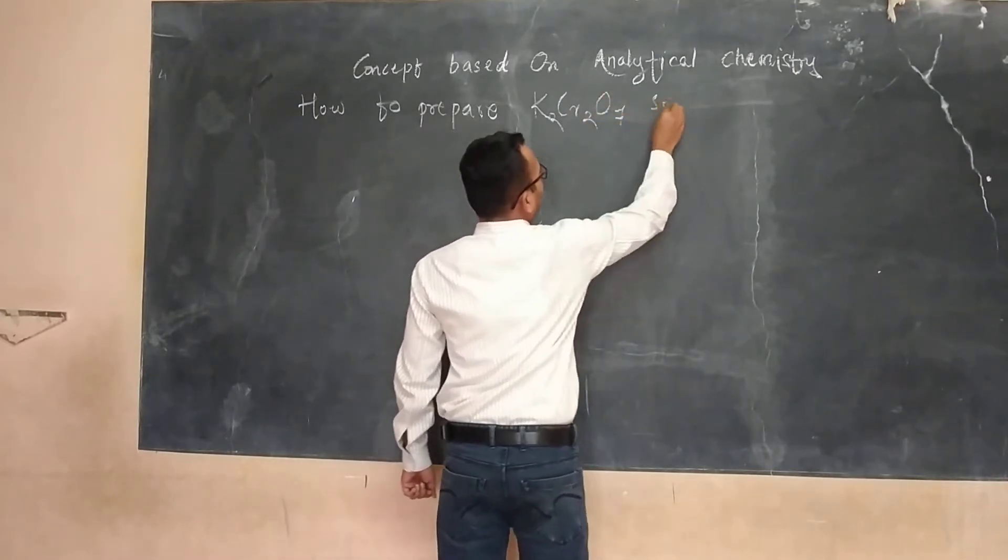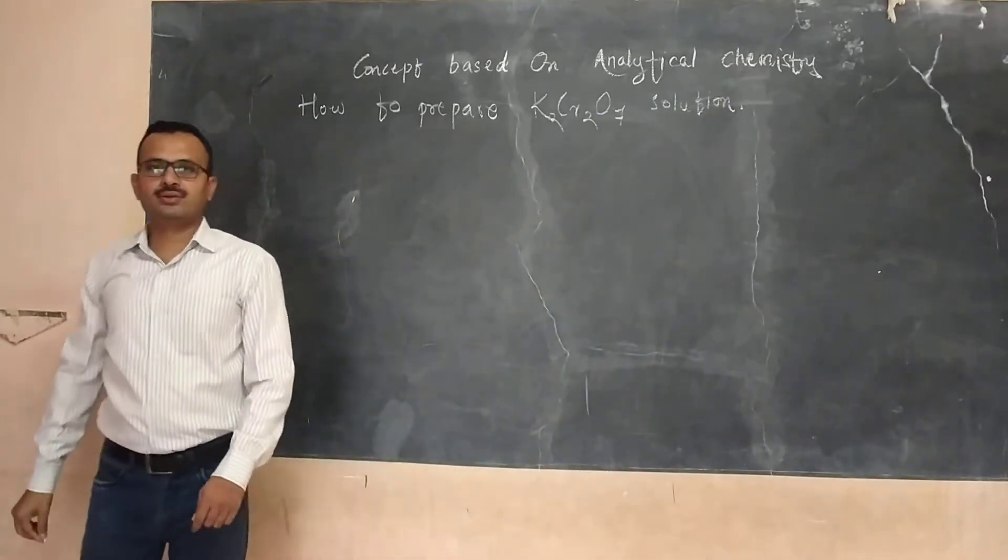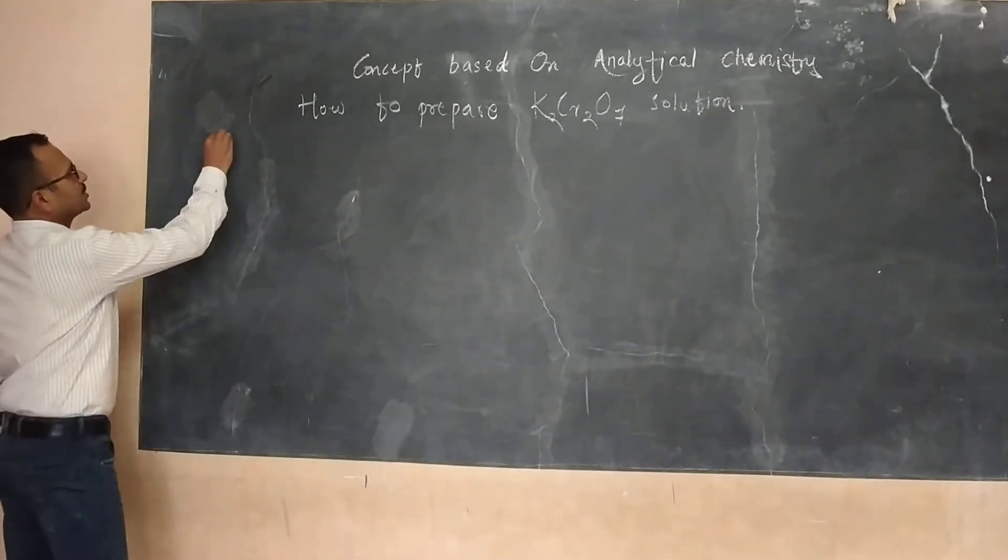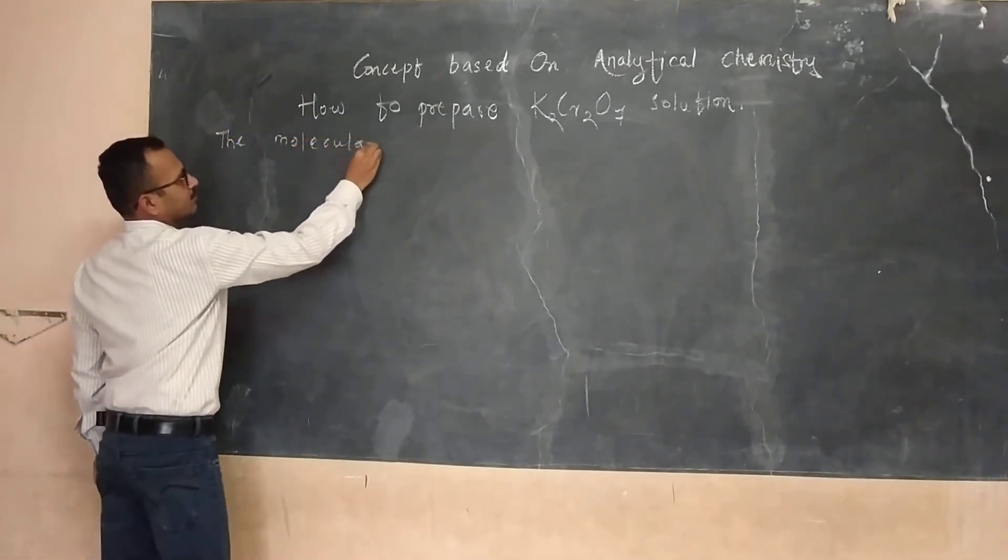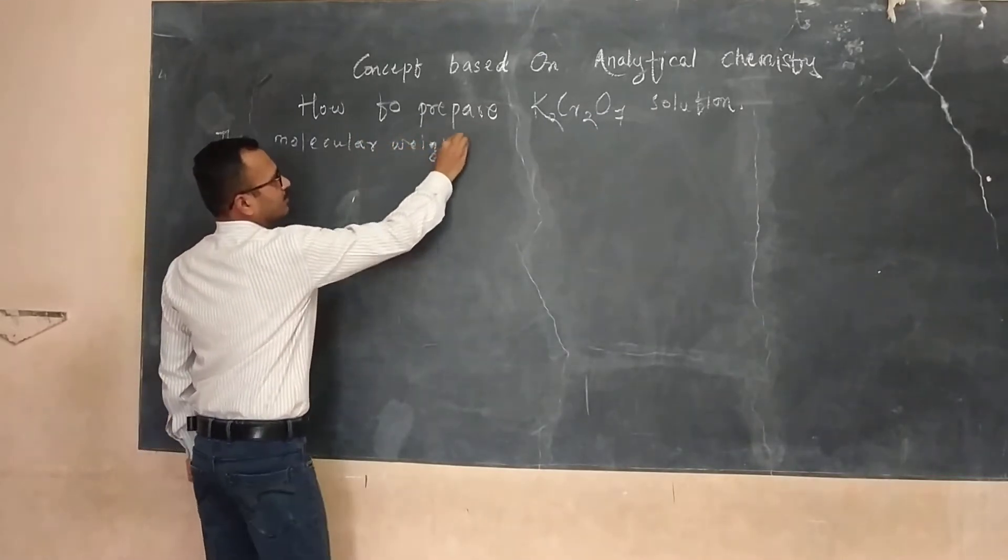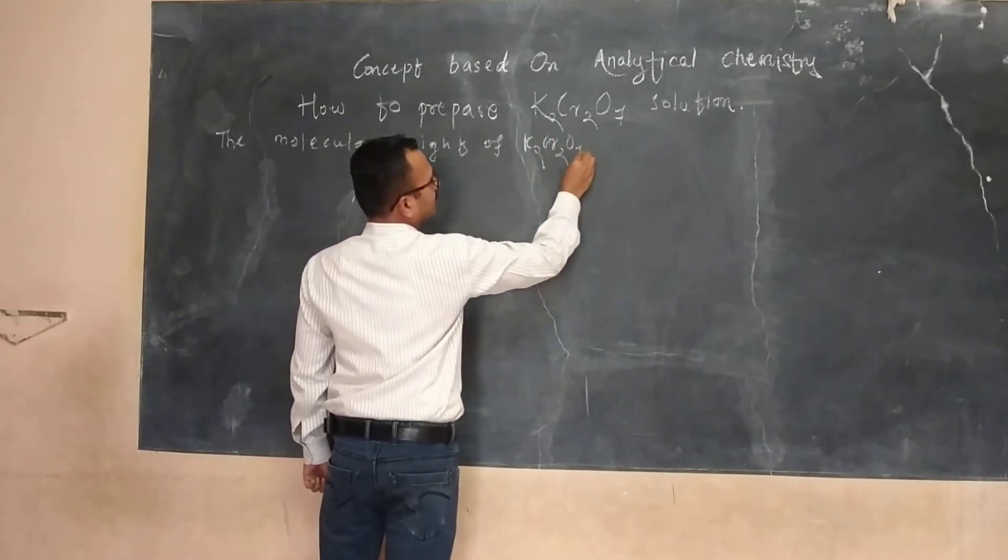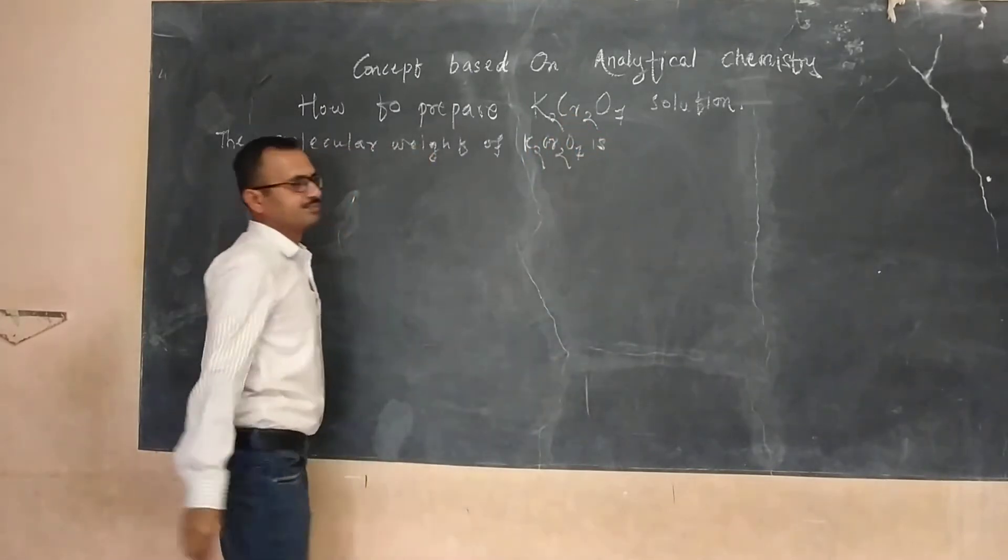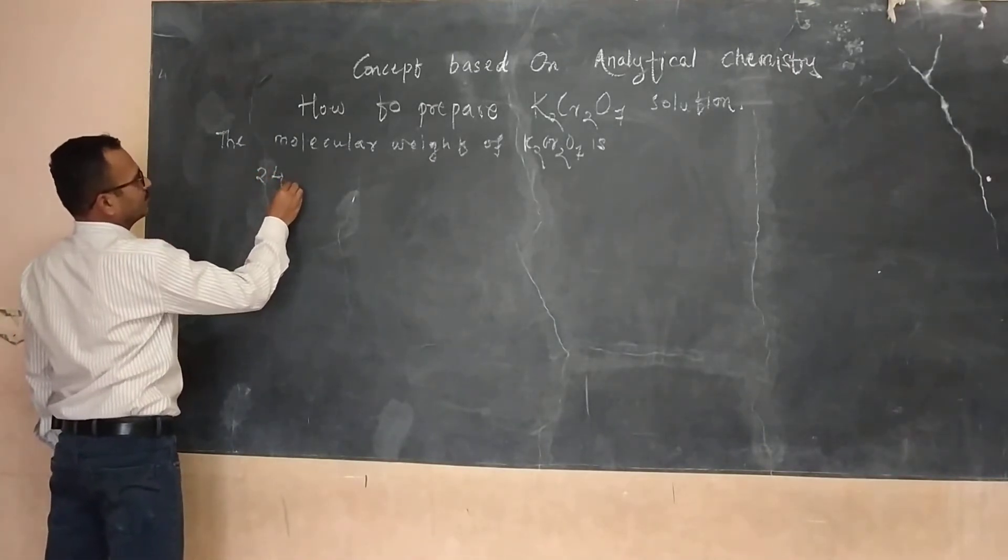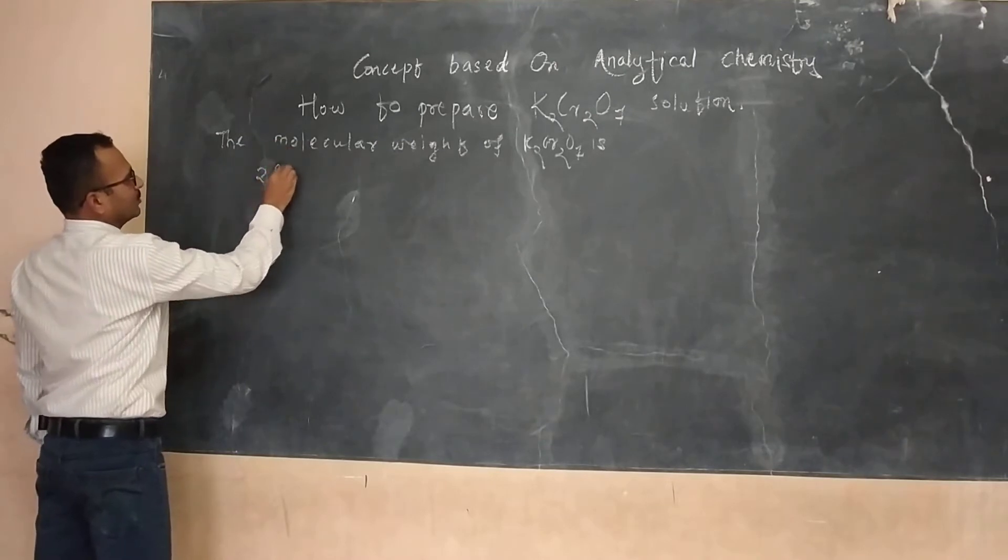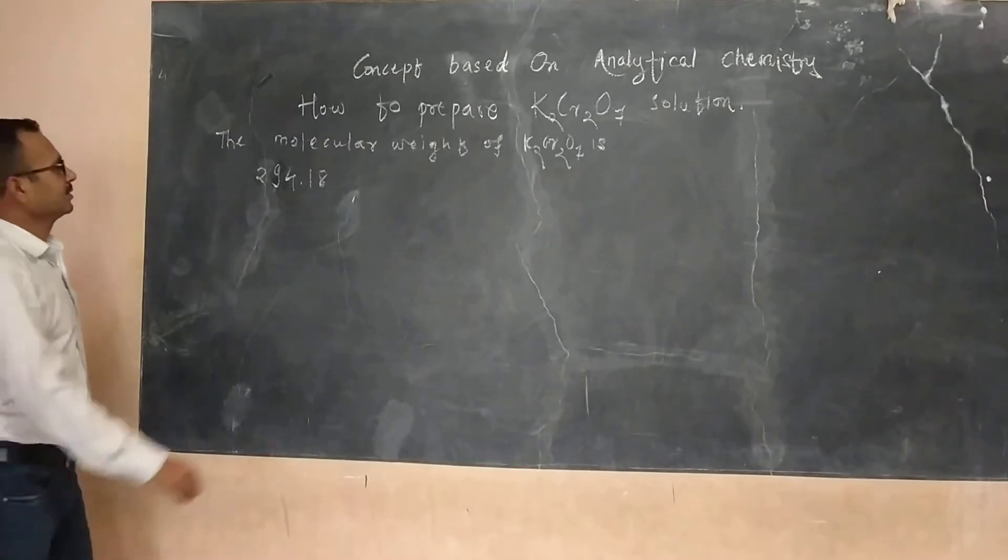Potassium dichromate and solution. Now, first of all, the molecular weight of potassium dichromate is 294.218.